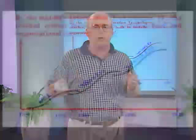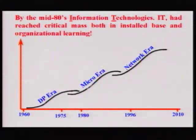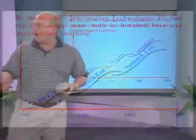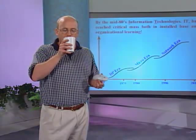By the mid-80s, information technology had reached critical mass both in installed base and organizational learning. In the 1960s, the computer era IBM took off with the DP — data processing era. By 1975 it was called the micro era, where you had all these little mini-mainframes.